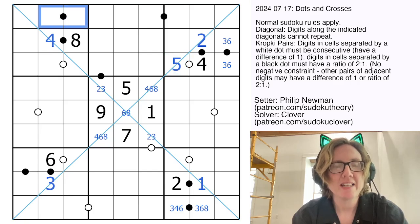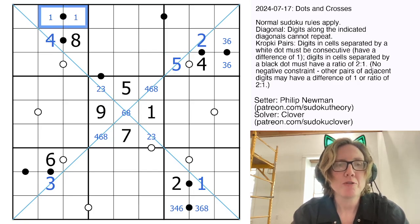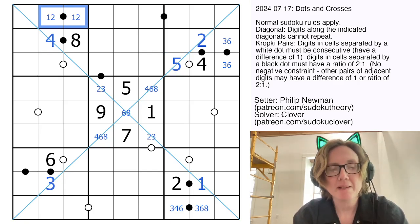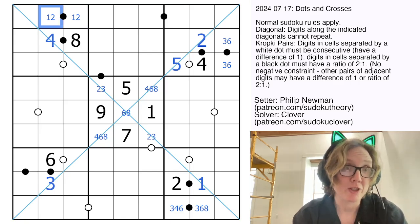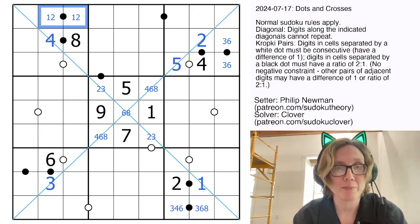Here I can't use 4 or 8, so this has to be a 1, 2 pair or a 3, 6 pair. However, it can't be a 3, 6 pair at all because I can't put the digit 3 or the digit 6 into this particular cell, so this will have to be a 1, 2 pair.